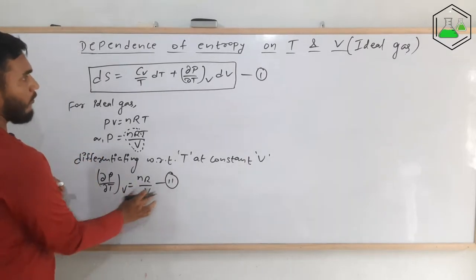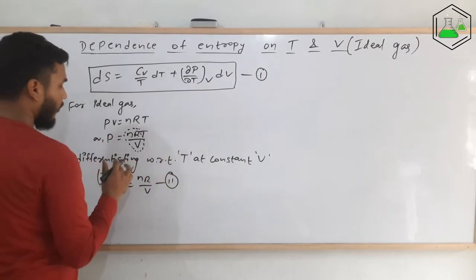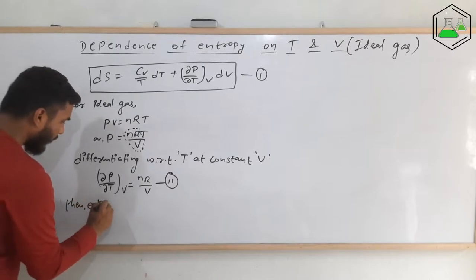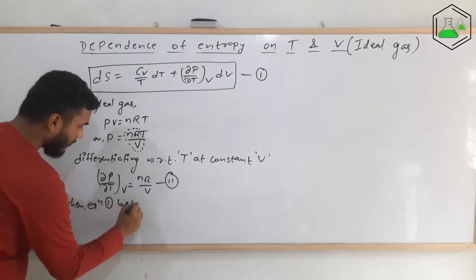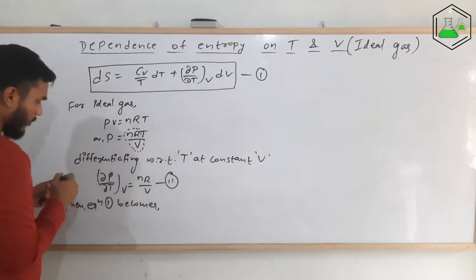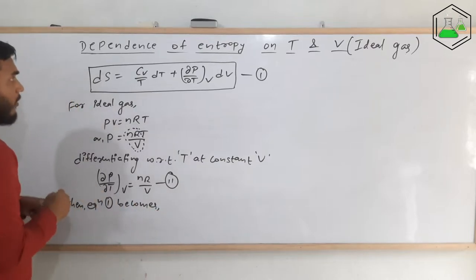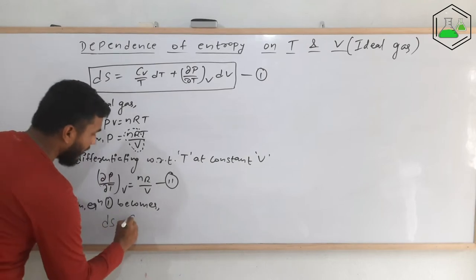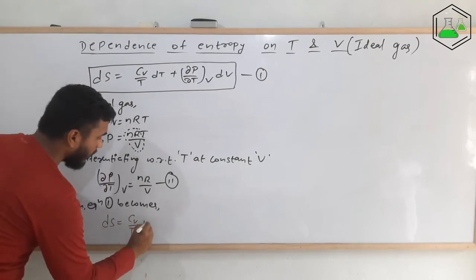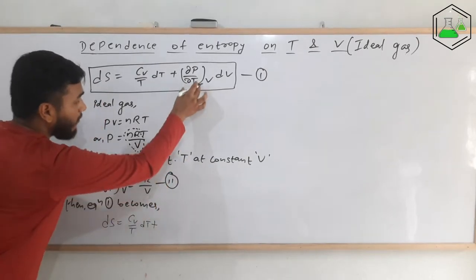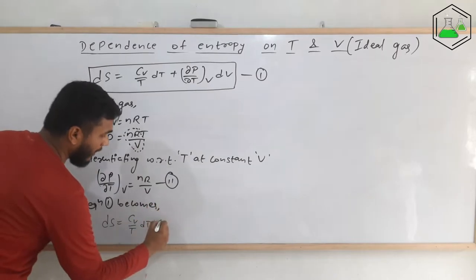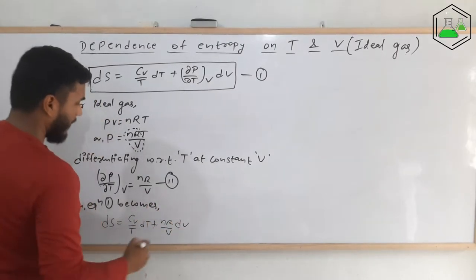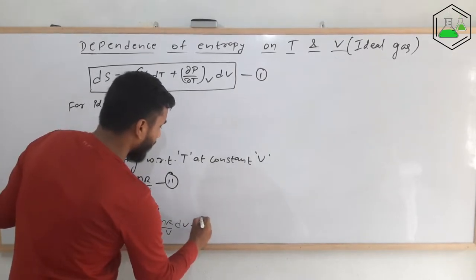Now we need to apply this value in equation number 1. Substituting, equation 1 becomes: ds equals (Cv/T)dT plus (nR/V)dV. This is equation number 3.